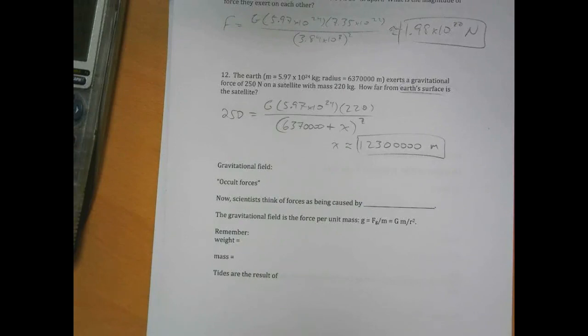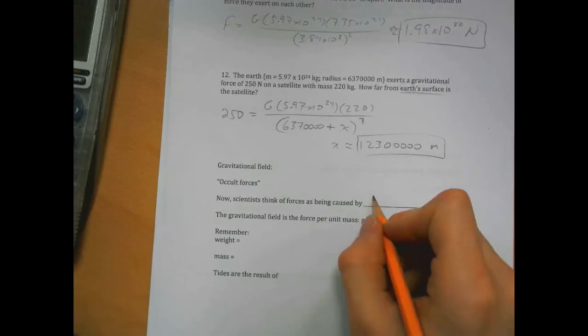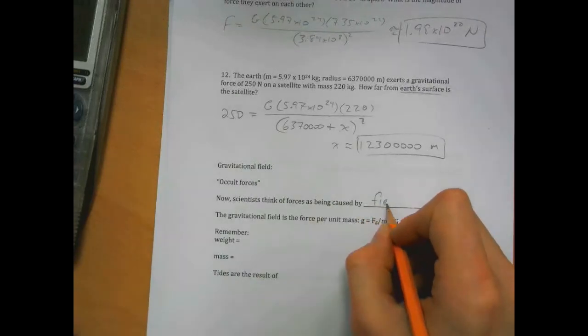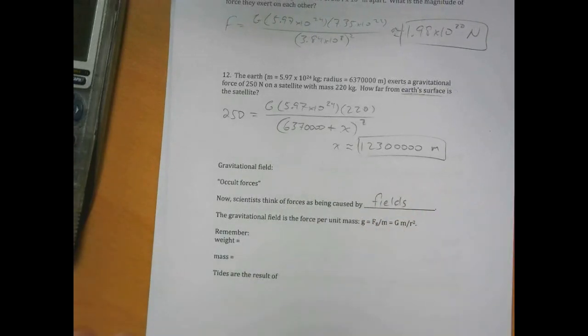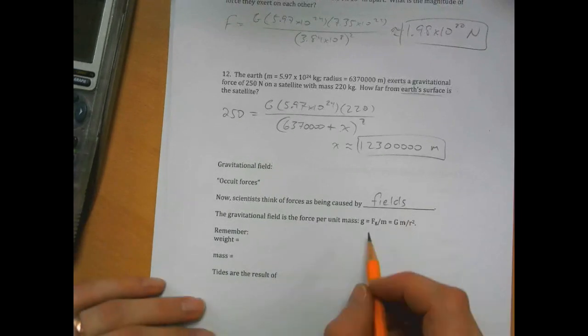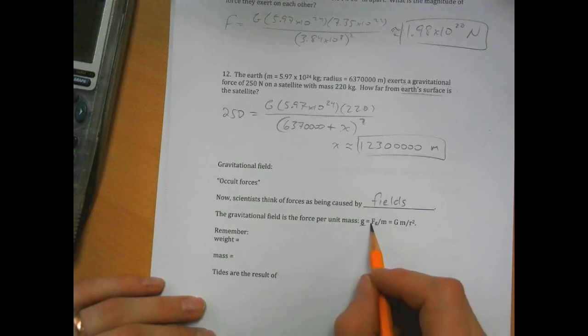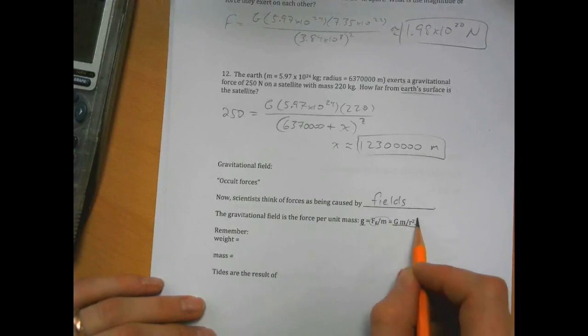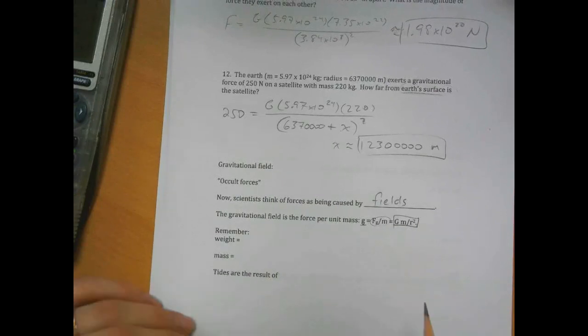Nowadays, scientists think of forces as being caused by fields, so there is a gravitational field that extends through all of space, and the gravitational field is what causes the force on a given mass. There's an electric field that causes the electric force, magnetic fields, etc. Gravitational field is g, it's gravitational force over m, or gm over r squared.